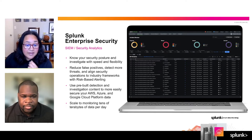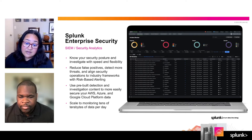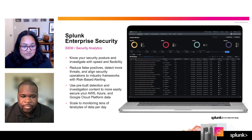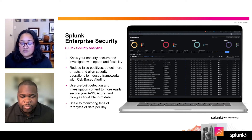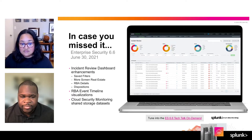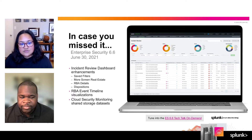Again, we'll cover a little bit more about RBA later. You'll also hear from a lot of our customers who are implementing RBA and some of their results that they've experienced already to date. ES also helps you strengthen your cloud security posture by giving you the visibility you need across AWS, GCP, and Azure cloud services. And then last but not least, the scalability to monitor unprecedented volumes of tens of terabytes per day of data. So in ES 6.6, which was released back in June, we added a lot of new capabilities and enhancements, including a new and improved incident review dashboard, a risk-based alerting event timeline visualization, and cloud security monitoring shared storage data sets.